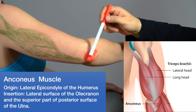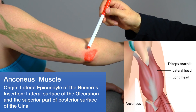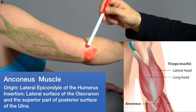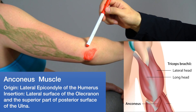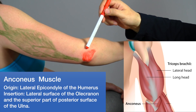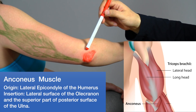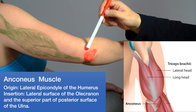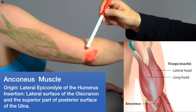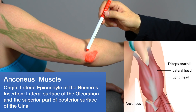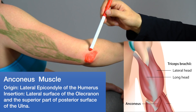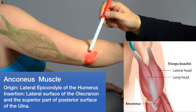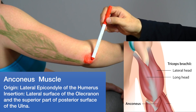The anconeus is a relatively small muscle. Its action is elbow extension, and it also plays a small role in abduction during pronation of the ulna. The muscle runs from the lateral epicondyle of the humerus to the superior ulna.